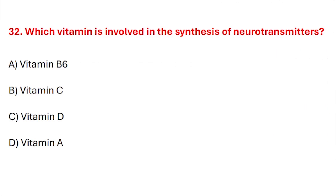Question number 32. Which vitamin is involved in the synthesis of neurotransmitters? Correct answer is option A: Vitamin B6.